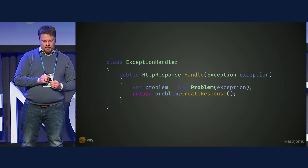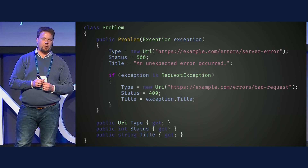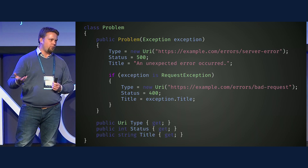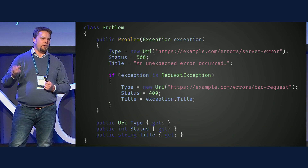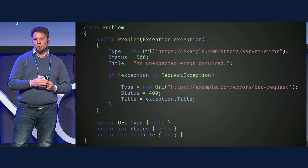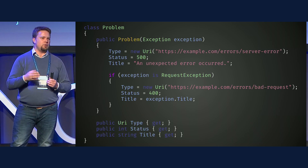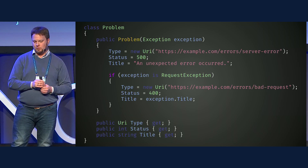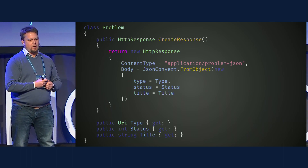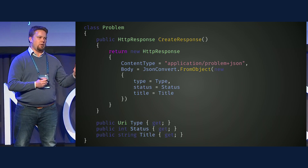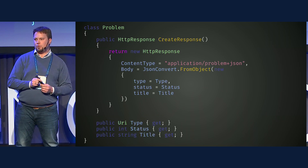Looking at how the Problem implementation might look in the exception handler: we default to 500 as our status code with a generic type and title. Then for each exception we handle in our code base, we add clauses that refine the error message, the type, title, detail, and everything. When we want to produce the HTTP response, we just serialize this object into JSON with the correct content type and status code.